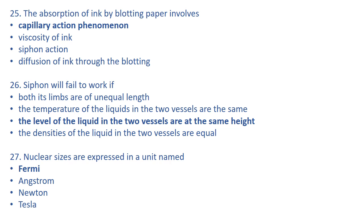Nuclear sizes are expressed in a unit named fermi. One fermi is equivalent to 10 to the power minus 15 meters. One angstrom is equal to 10 to the power minus 10 meters. Tesla is a unit of electric field intensity. Newton is a unit of force, so option C can be eliminated.